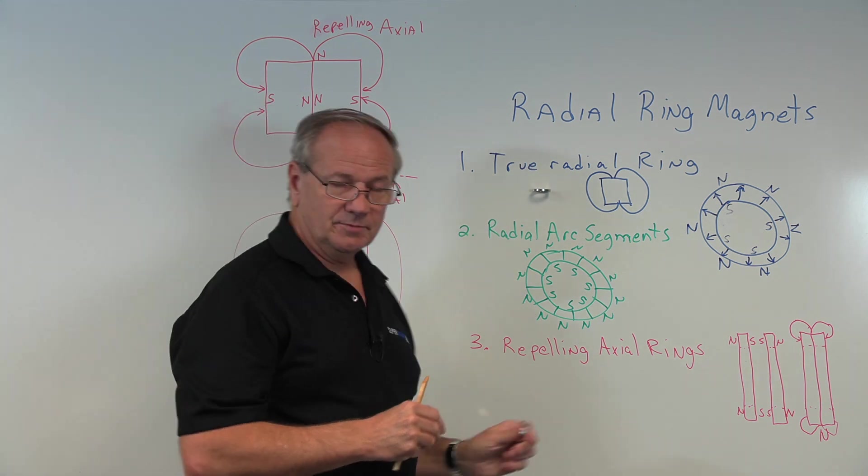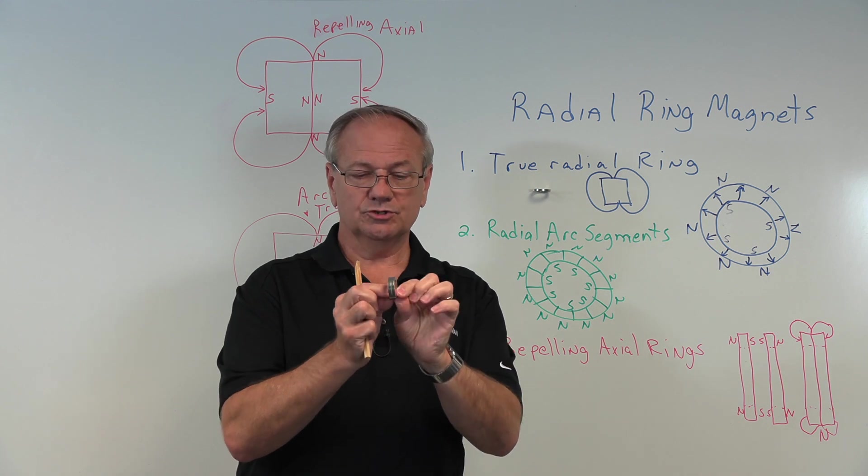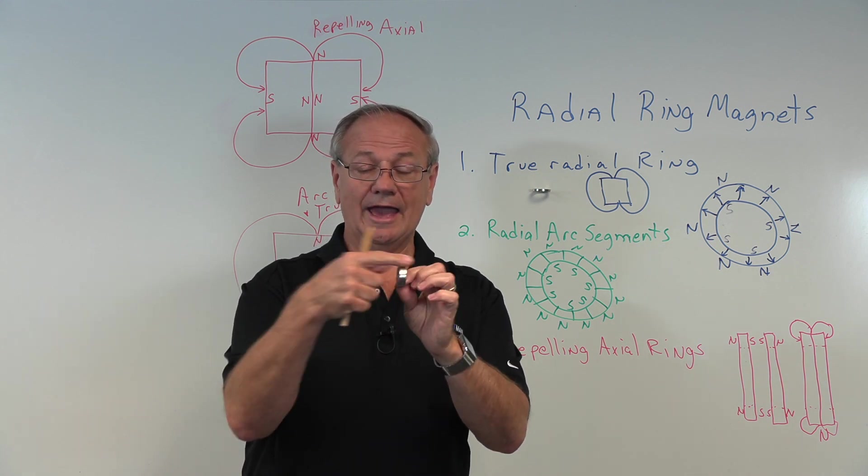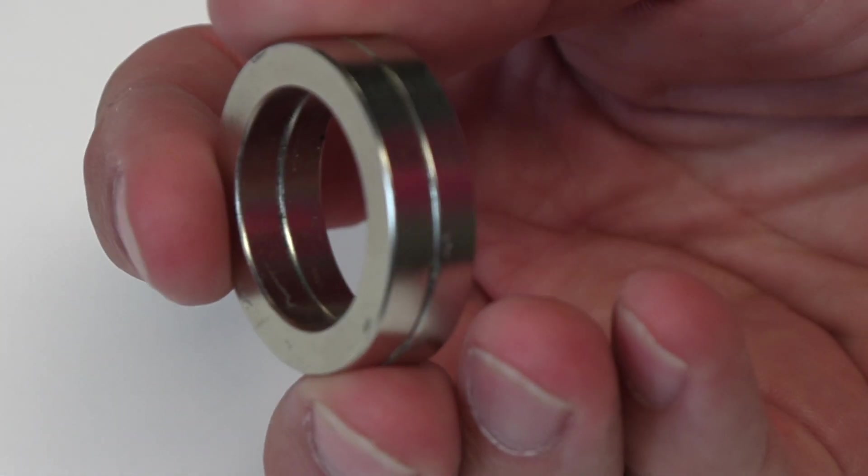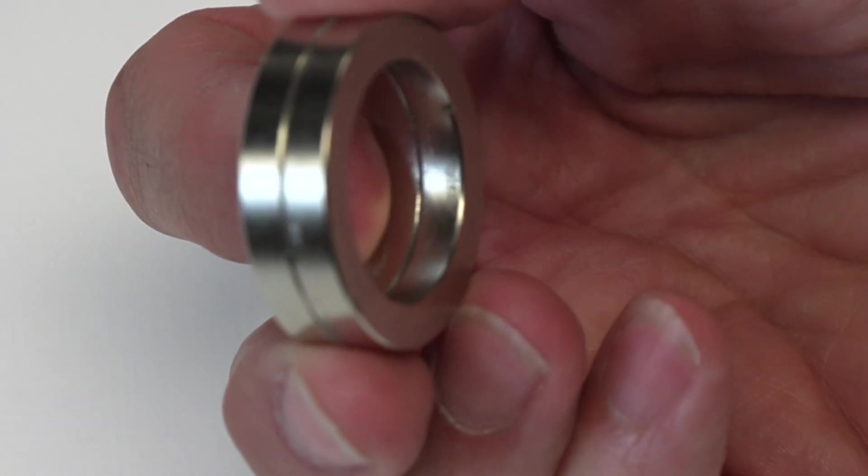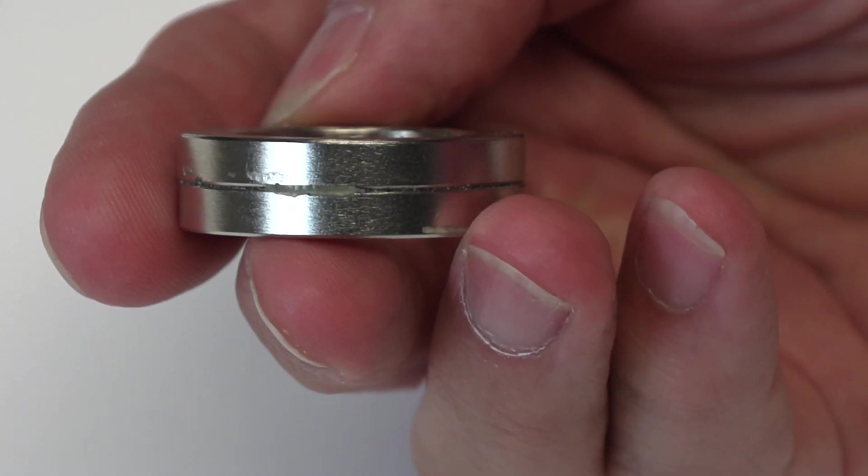Another technique people developed several years after the arc segments came out was, why don't we just push two axially magnetized magnets together with the poles repelling and create a radial ring this way and epoxy it together. And that works, but they're a little bit hard to make.